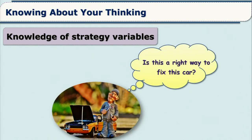Finally, we have knowledge of strategy variables, which includes knowledge about both cognitive and metacognitive strategies as well as conditional knowledge about when and where it is appropriate to use such strategies. Look at this picture — there is a boy thinking about whether this is the right way to fix a car, evaluating whether the strategy will work. Similarly, when working on an educational assignment, you think about whether a mnemonic will work for retention of a concept or whether a diagrammatic representation will work. These are knowledge of strategy variables.